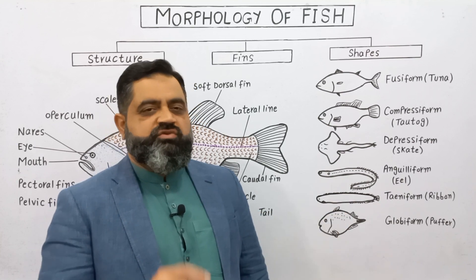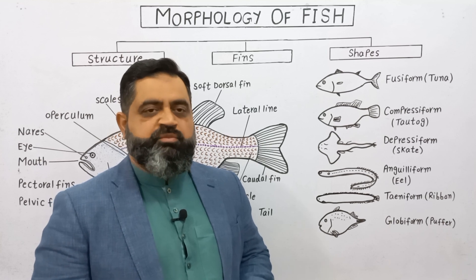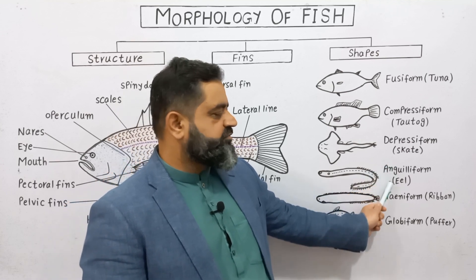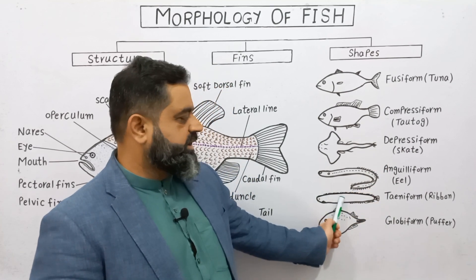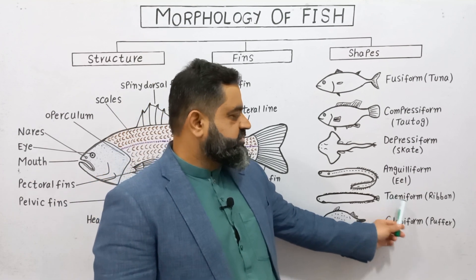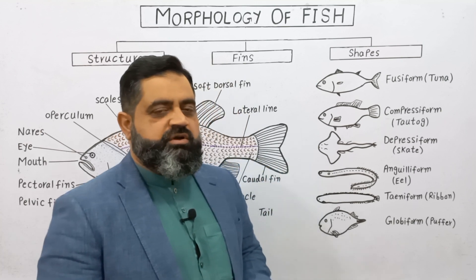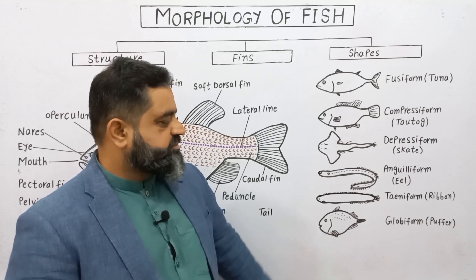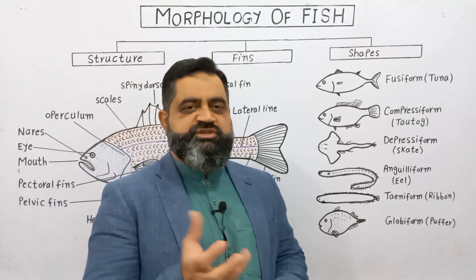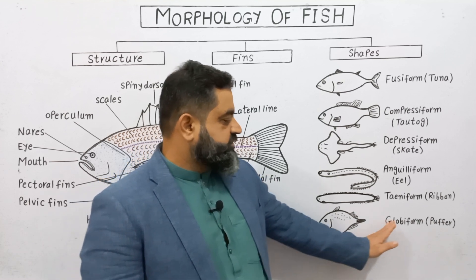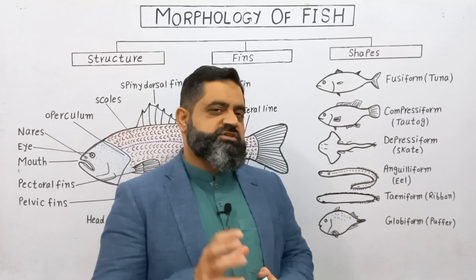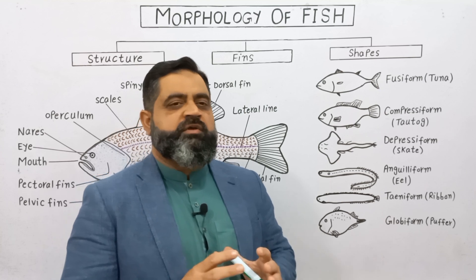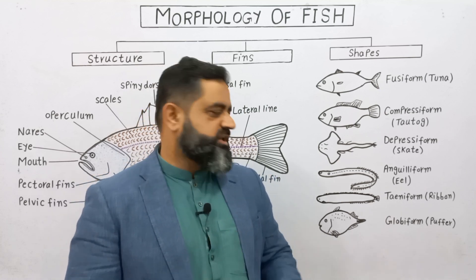Anguilliform fishes have a long snake-shaped body — very long with a snake-like form — and the example is the eel. Some fishes are ribbon-like, similar to a tapeworm; these are known as taeniform and the example is the ribbon fish. Some fishes become globiform — globose or bulb-shaped — such as the puffer fish. When disturbed or annoyed, puffer fish inflate to become balloon-like, which is why they are called puffer fish.